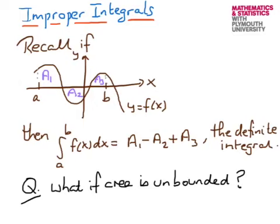Improper integrals are always definite integrals. So we should look first at what a definite integral is. We have a curve — the integrand — the function which we later want to integrate. If we sketch our curve and want to integrate from some lower limit of integration to an upper limit of integration, with a here and b here, then our interpretation of a definite integral is that it is the sum of any areas between the curve of the integrand and the x-axis.